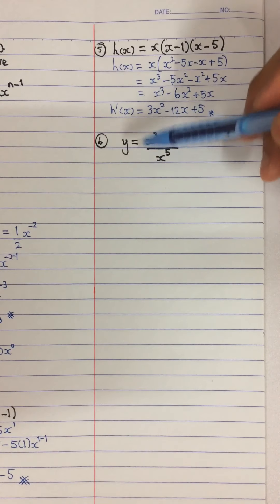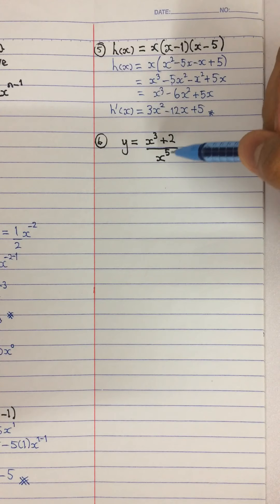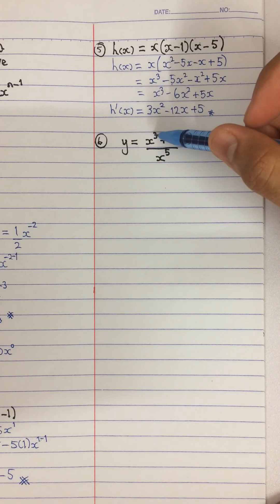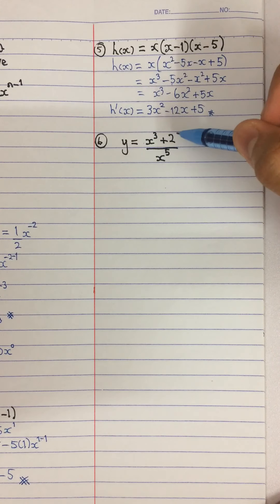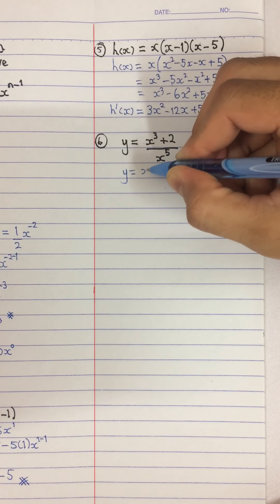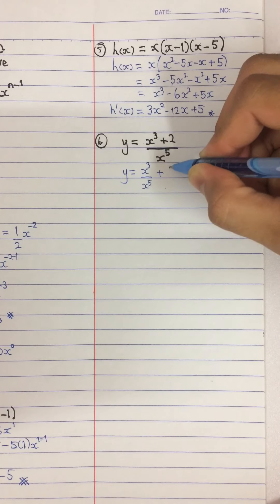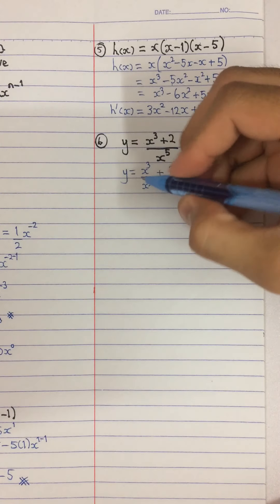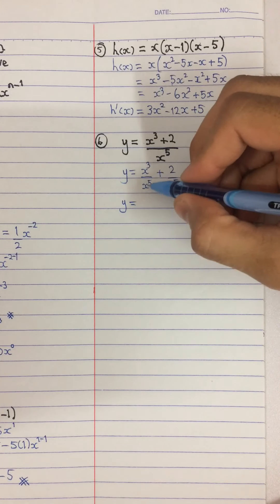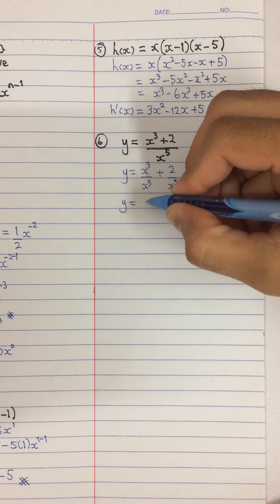For example, if you have y equals to 3x to the power of 4, find the first derivative. To find the first derivative, you write dy by dx. You bring 4 down, so you have 3 times 4, and then subtract 1 from the power, which is 4 minus 1. Simplifying: 3 times 4 is 12, so dy by dx equals 12x to the power of 3.